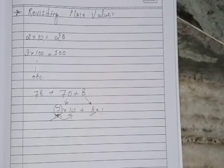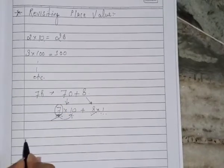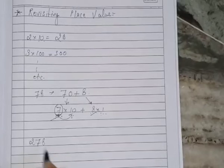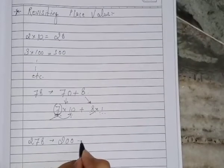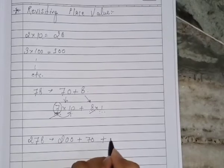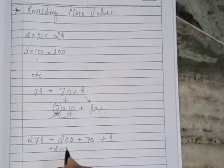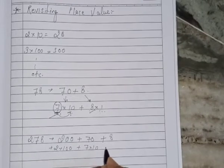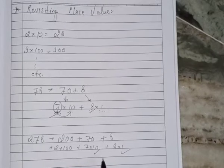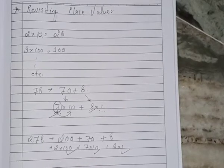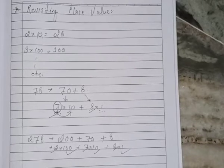Similarly, the expansion of a 3 digit number like 278 can be written as 200 + 70 + 8. It means you can write it as 2 × 100 + 7 × 10 + 8 × 1. Its place values are 1s, 10s and 100s.